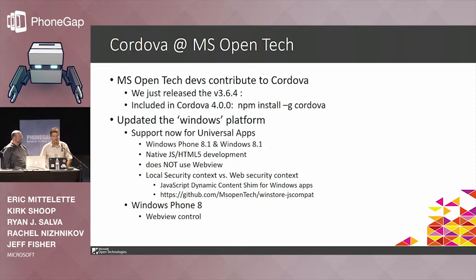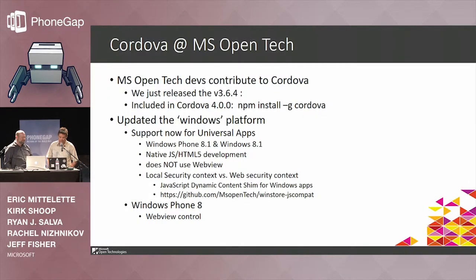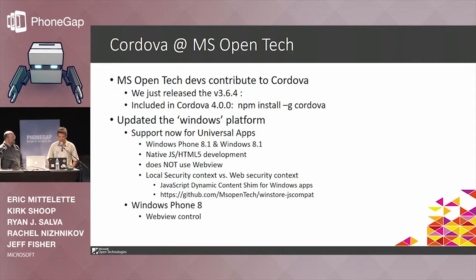Cordova at MS Open Tech — we've been contributing for a few years now. Some developers, like Kirk, created the latest build. You can see the last version compatible with Cordova 4.0. Just install it and try it. We updated the Windows keyword for this version, and we now support and create a universal app project structure. When you create a new project with Cordova, we create at the same time one project for Windows Phone 8.1, one for Windows 8.1, and for compatibility reasons, one for Windows Phone 8.0.